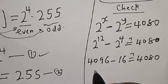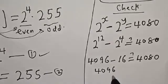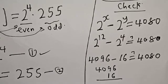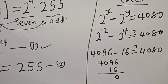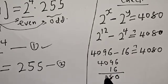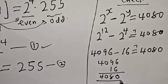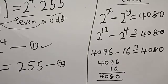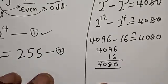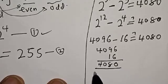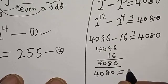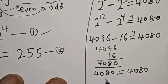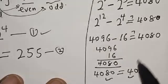Let's subtract: 4096 minus 16 equals 4080. Therefore 4096 minus 16 is equal to 4080, which satisfies the given equation. We confirm that x equals 12 and y equals 4 is correct.